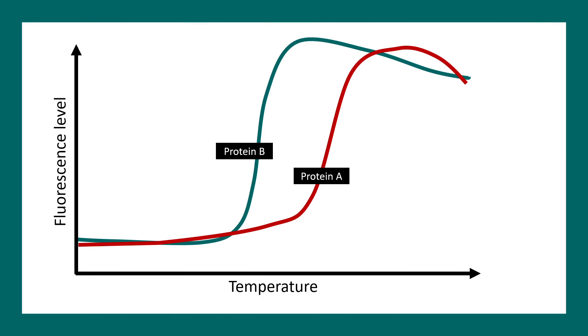Let's say we have two proteins and they have DSF curves like this. We can tell from these curves that protein A has more thermal stability because it shows fluorescence at a higher temperature compared to protein B.